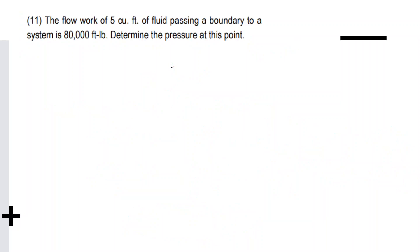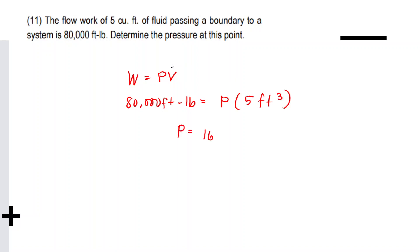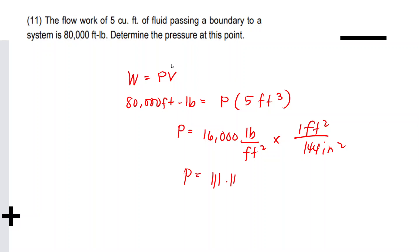Next: the flow work of 5 ft³ of fluid passing a boundary to a system is 80,000 ft·lb. Determine the pressure. Flow work = PV, so 80,000 = P × 5, giving P = 16,000 lb/ft². Converting: 16,000 ÷ 144 = 111.11 PSIA. That is our final answer.